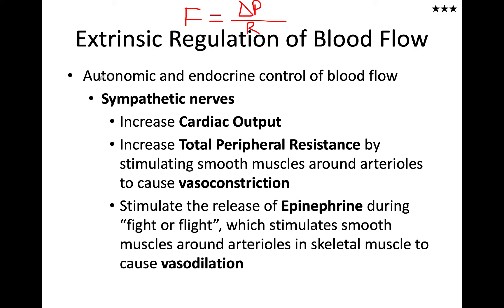The first method we're going to talk about for blood flow regulation is the autonomic pathway. The sensory nervous systems regulate cardiac output by affecting stroke volume, which is a function of contractility. Contractility refers to how strong the heart can contract.